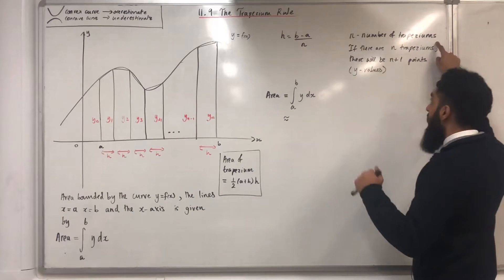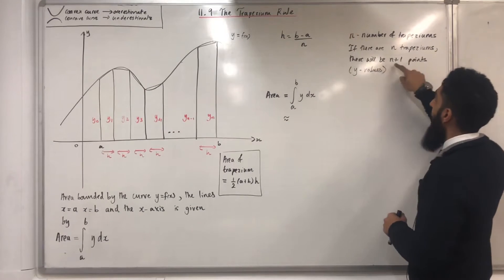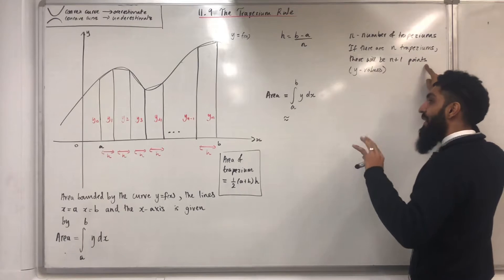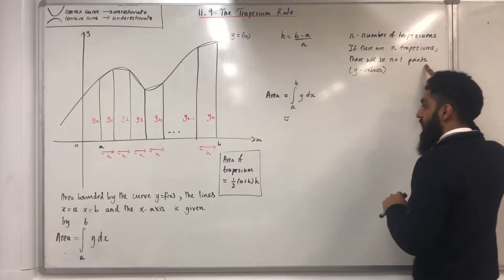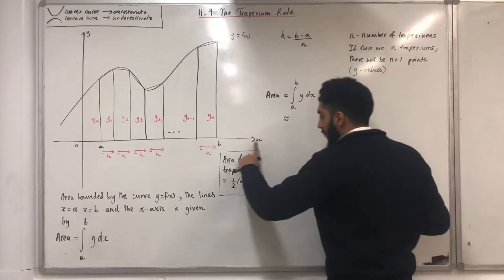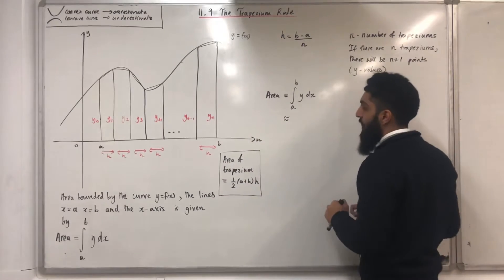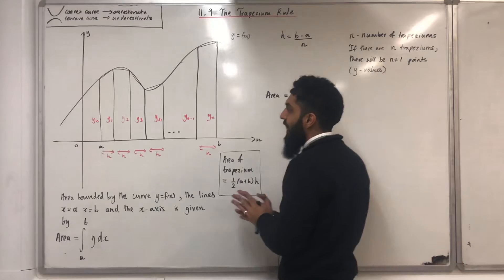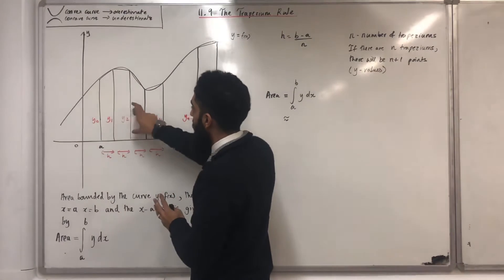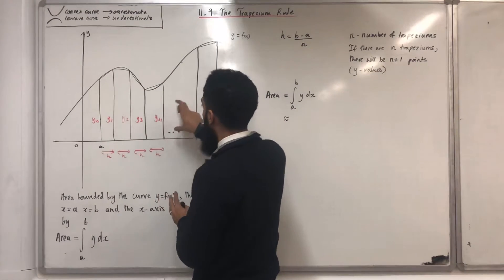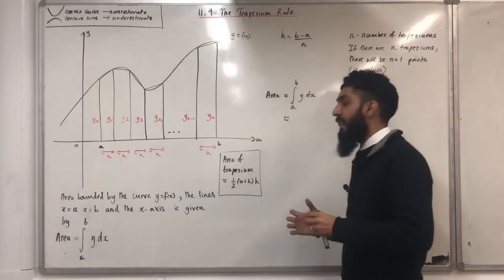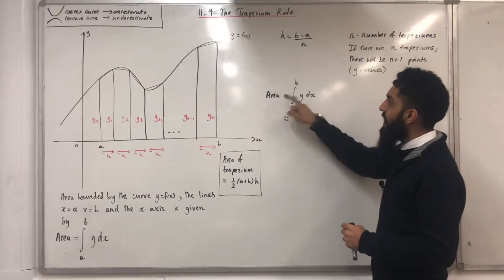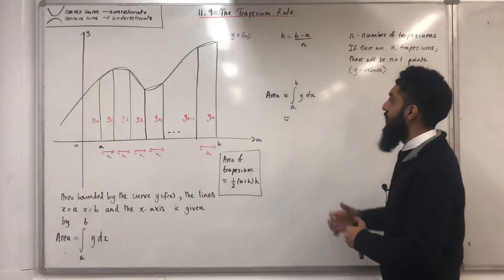In general, if there are n trapezoids, there will be n plus 1 points, which represents n plus 1 y-values. I've got the formula for the area of a trapezoid. I'm going to use this formula to work out the area of each of these trapezoids, and then add them together to give me the approximation for the area — in other words, this integral.